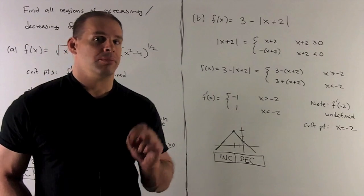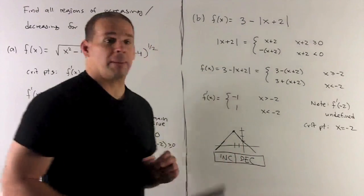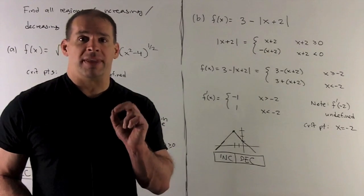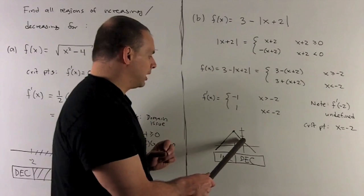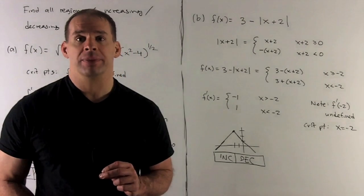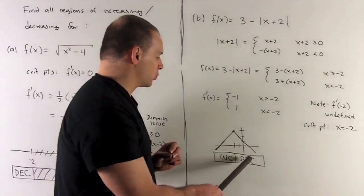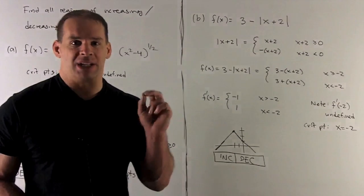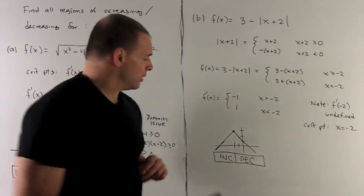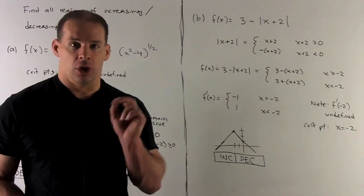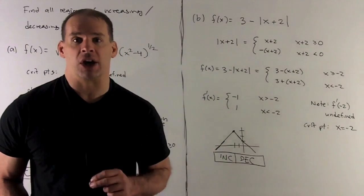Plugging in 0 (which is in the region x ≥ -2), the derivative is minus 1 — negative — so the function is decreasing there. Plugging in minus 5 (which is in the region x < -2), the slope is 1 — positive — so the function is increasing on that side. This is confirmed by the graph, so we're confident in our answer.